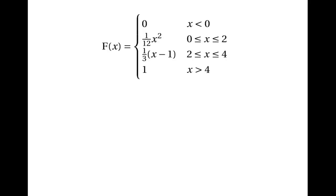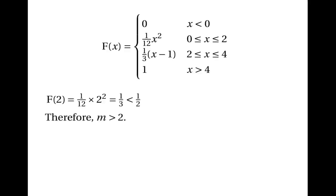A better approach is to test at the very beginning whether the median lies between zero and two or between two and four, by finding the cumulative probability at two. Calculating F(2): one twelfth times two squared equals one third, which is less than a half. So when x is two we haven't yet reached the cumulative probability needed for the median — the median must be more than two. As soon as we know that, we deal with the case where x is between two and four and solve the equation exactly as before.